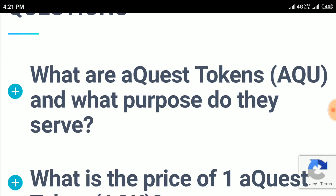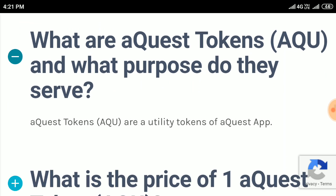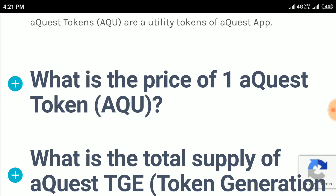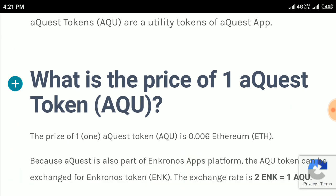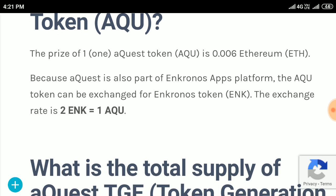Frequently asked questions. What is the AQUA token? What purpose does it serve? The AQUA token is a utility token of the AQUA app. What is the price of one AQUA token? The price of one AQUA token is 0.006 Ethereum, because it was also part of the Influence Apps platform.